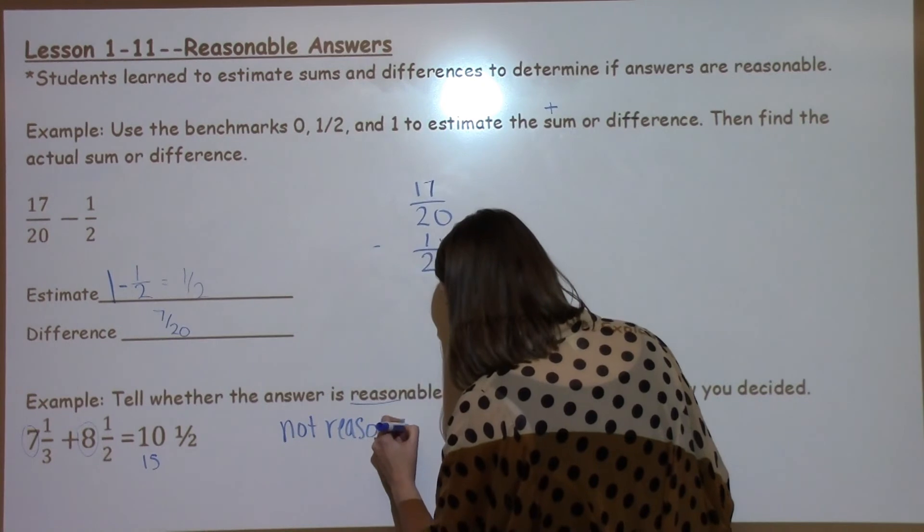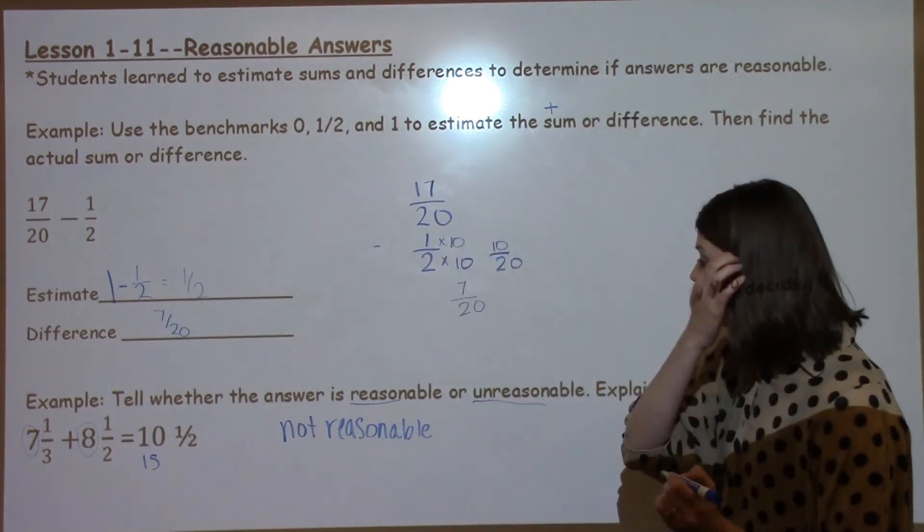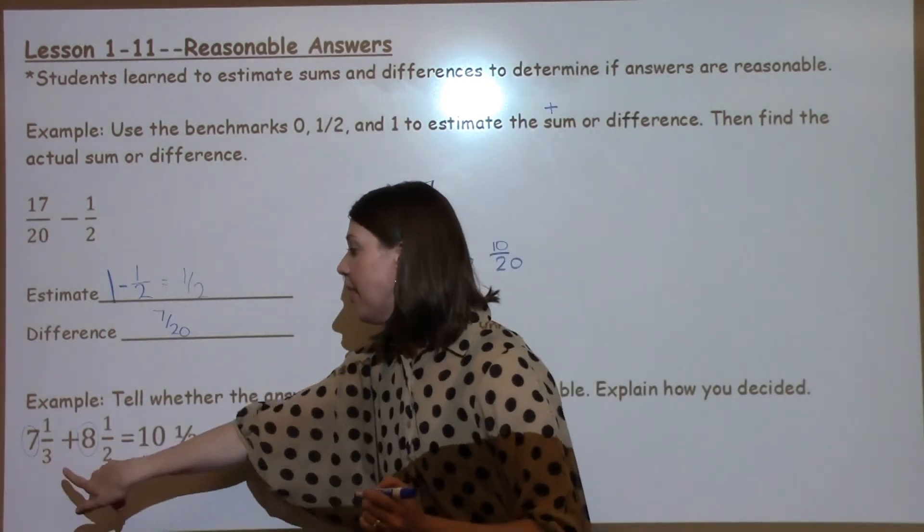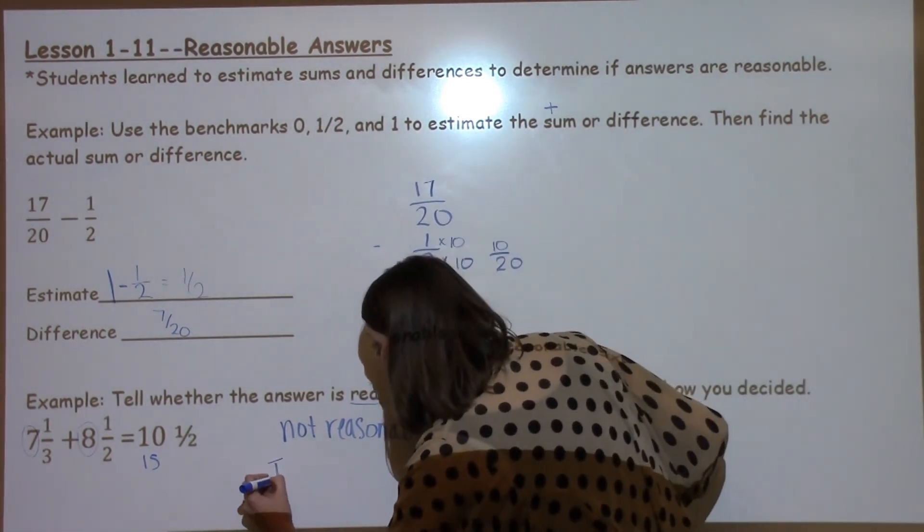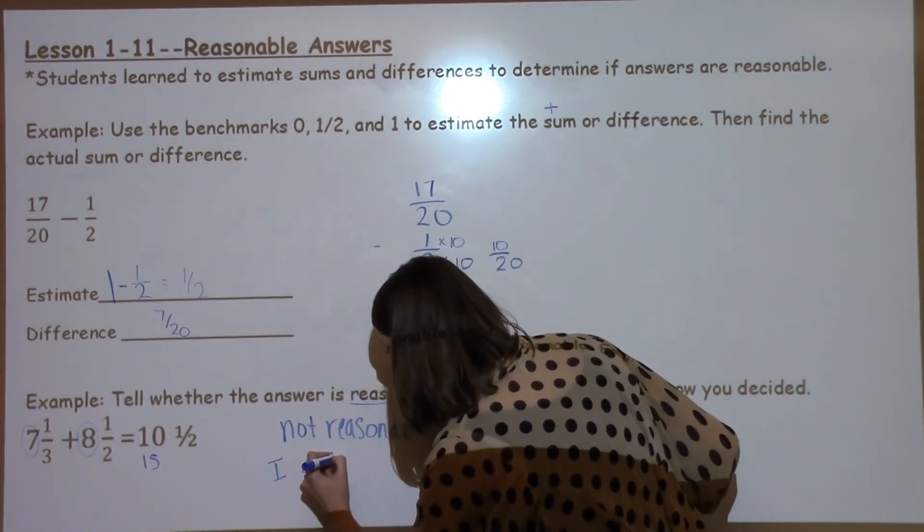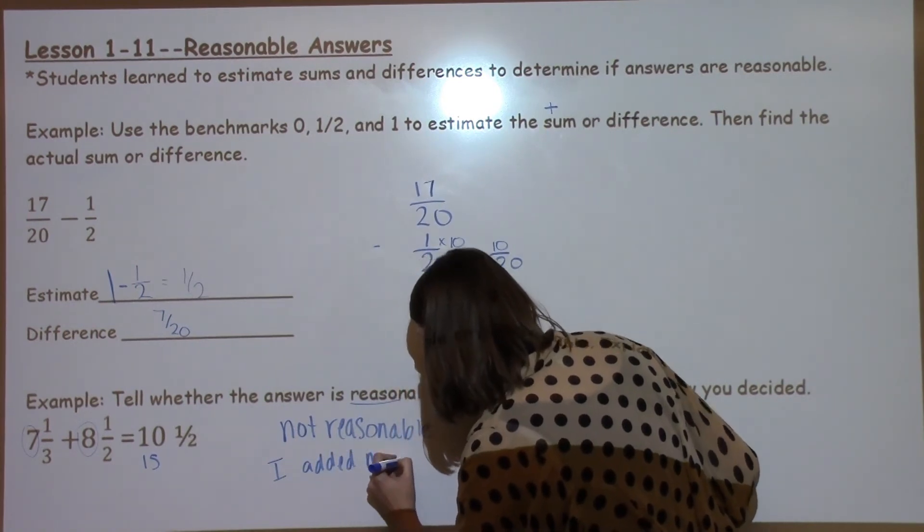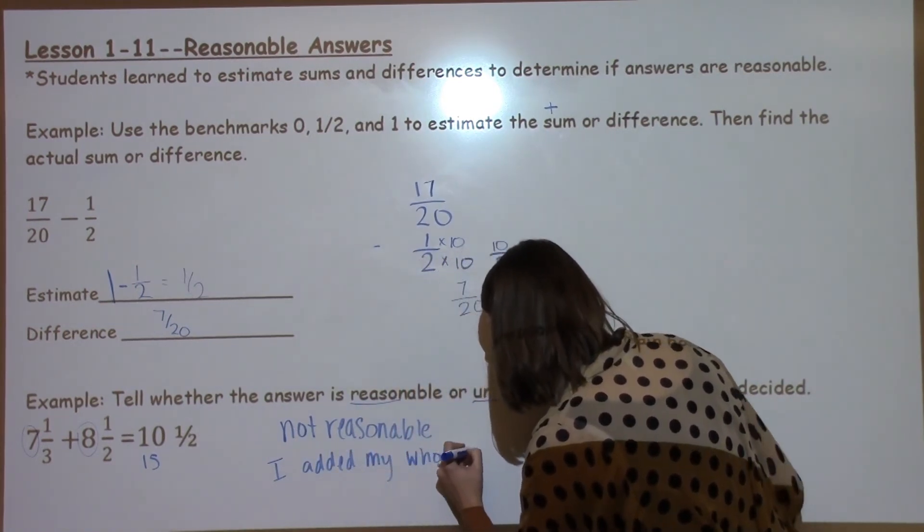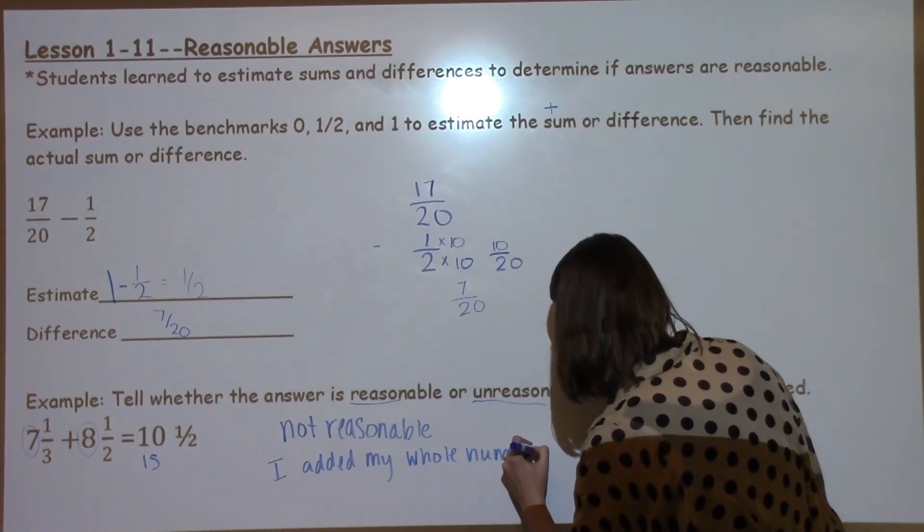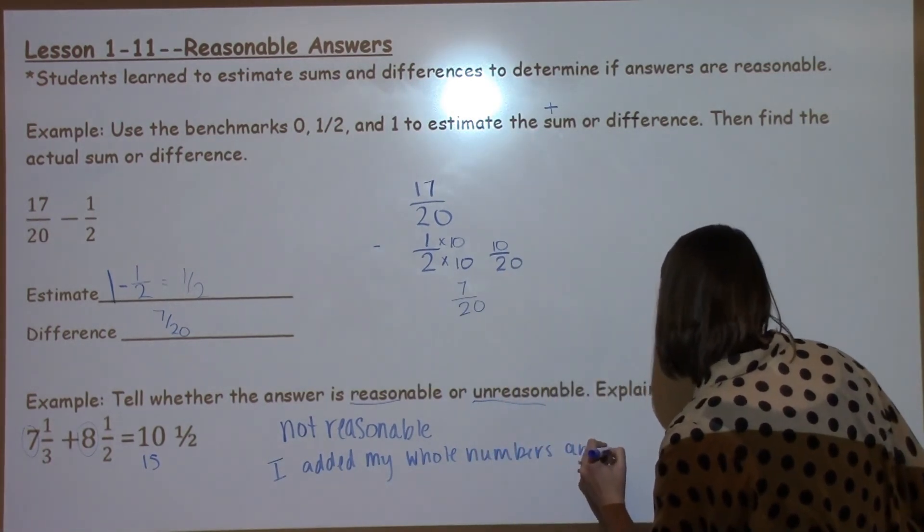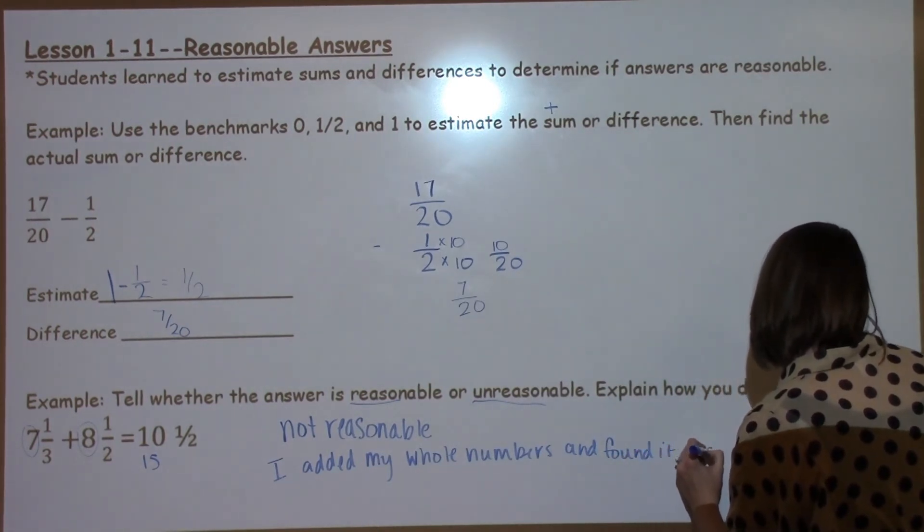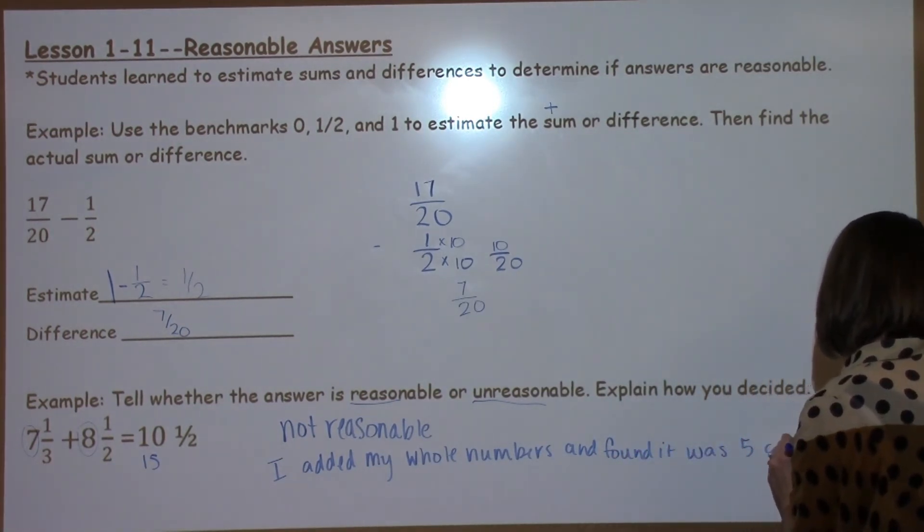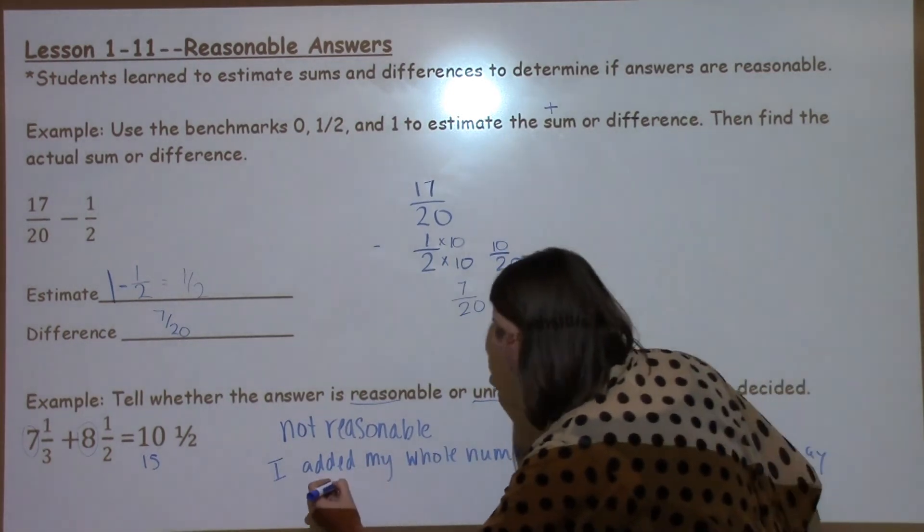How I did this just now is I used simple addition to add my whole numbers. So to explain how I did this, I would write, I added my whole numbers and found it was 5 away from the answer.